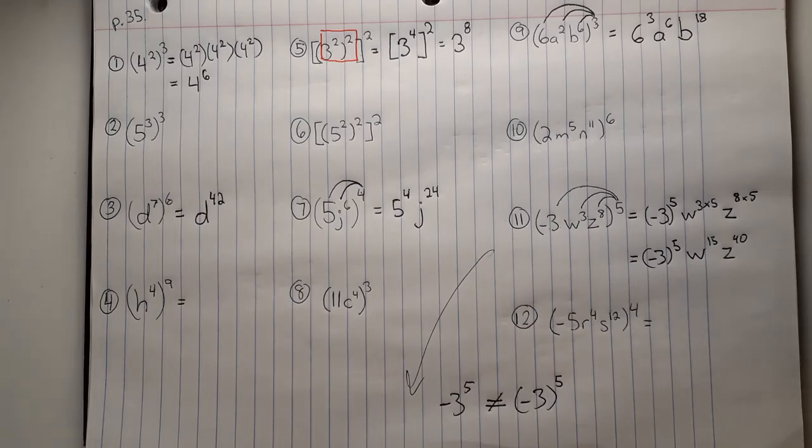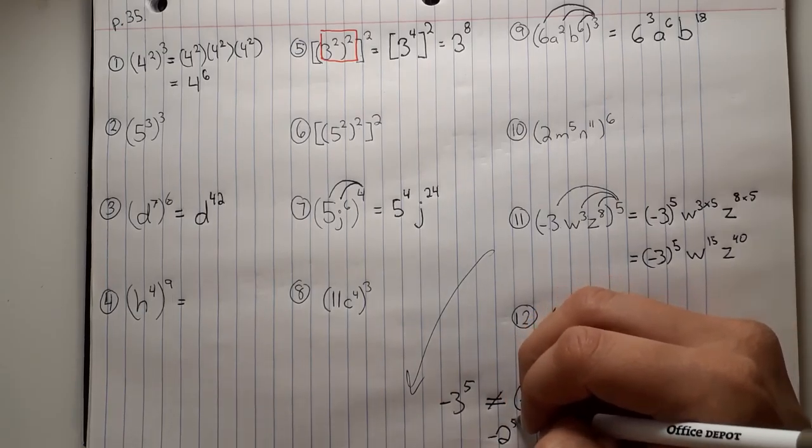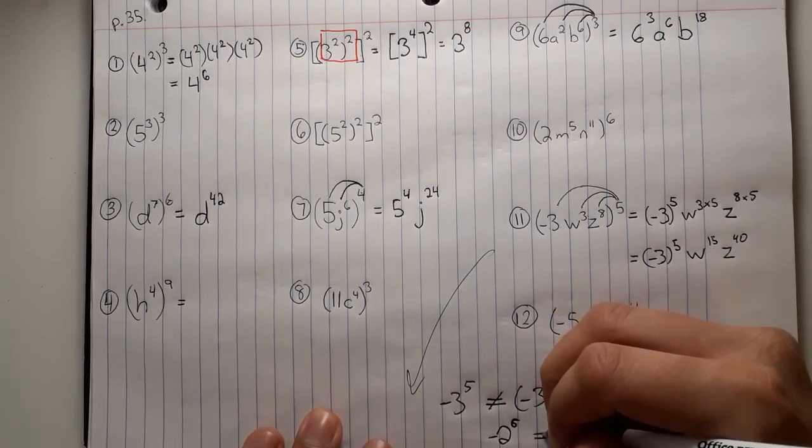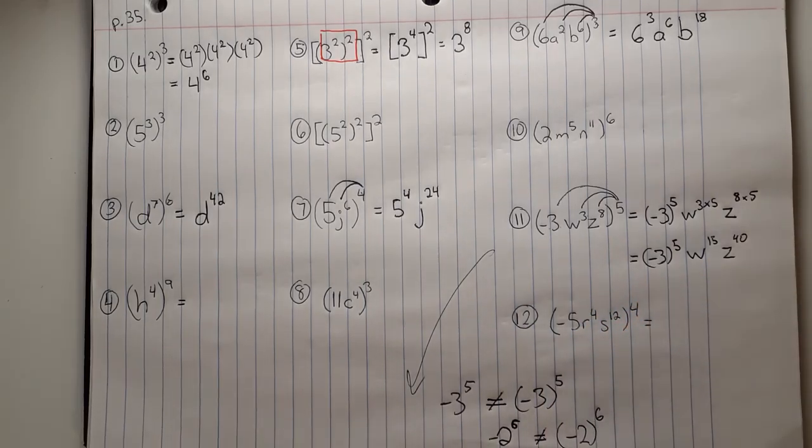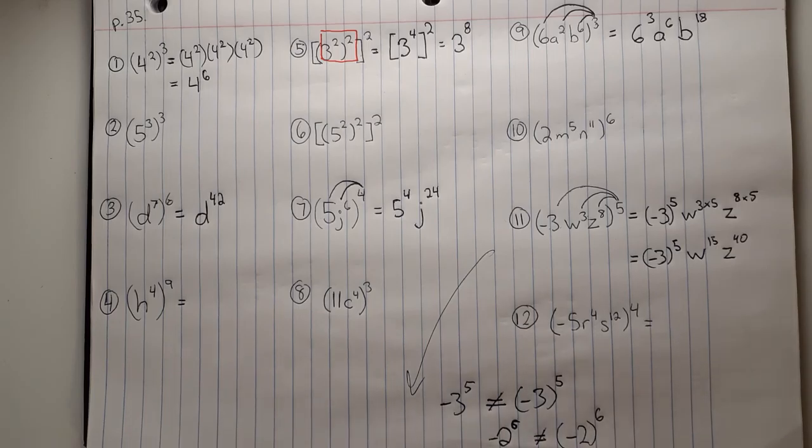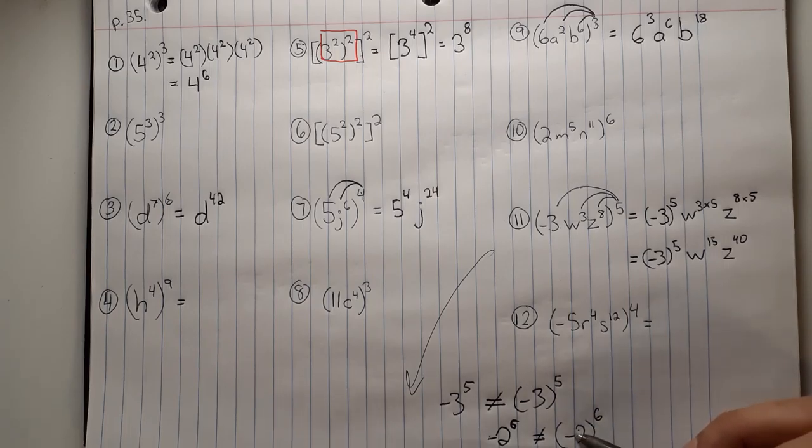Although in this case it is equivalent. A better example would be something like negative 2 to the power of 6 is not equal to negative 2 to the power of 6. This side will be positive, this side will be negative because here the 6 does not affect the negative sign. Here the 6 will affect it and since the 6 is even it will be positive.